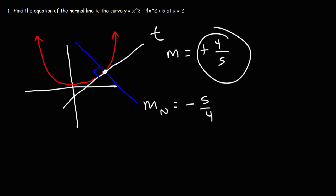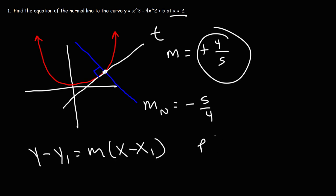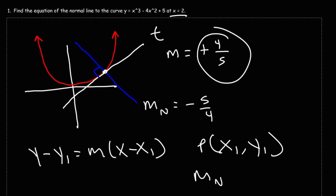Once you calculate the slope of the tangent line at, let's say, x equals 2, you need to find the negative reciprocal of that — that's going to give you the slope of the normal line. Then using the point, you can write the equation of the normal line. All you need is the x, y coordinate where the normal line touches the curve, and the slope of the normal line.